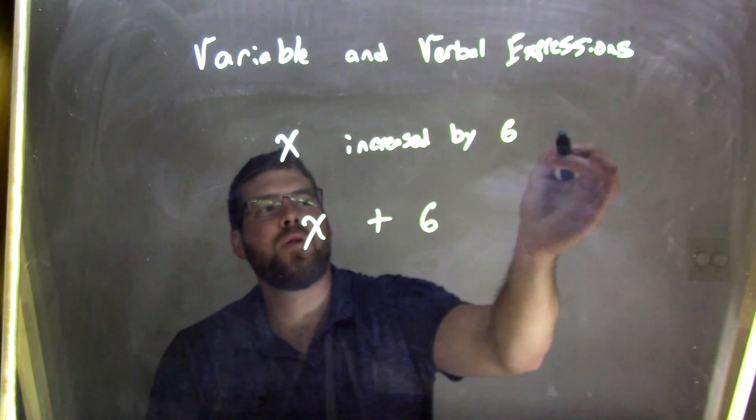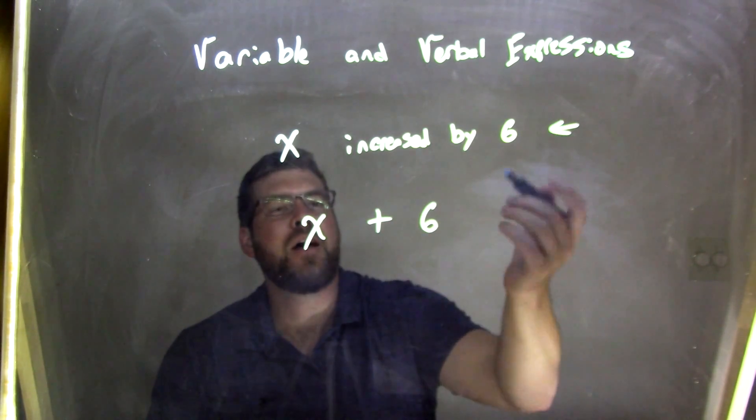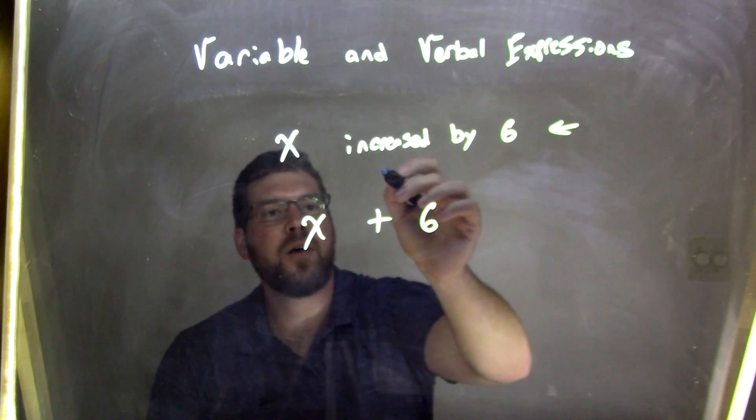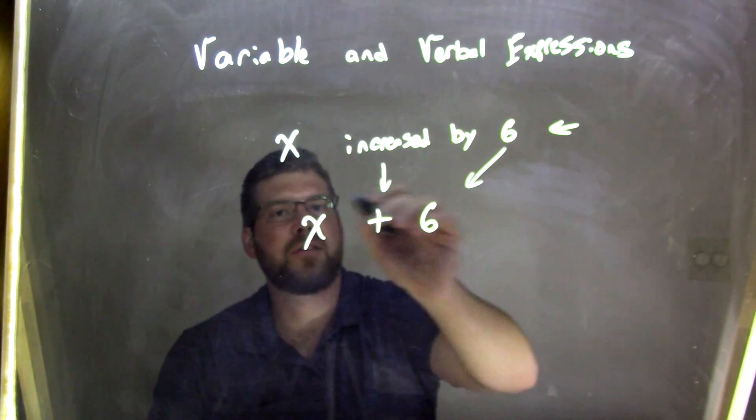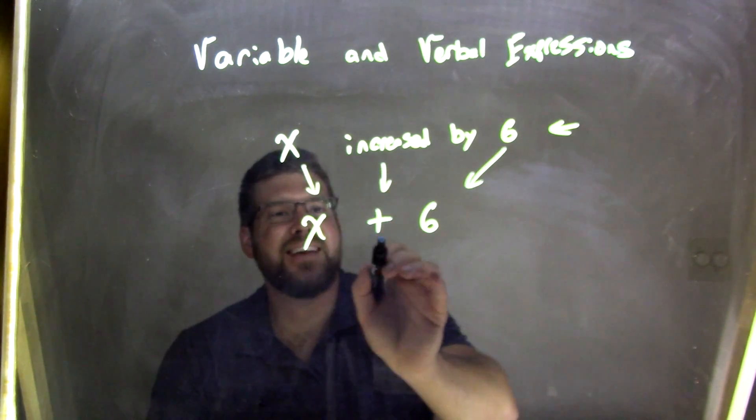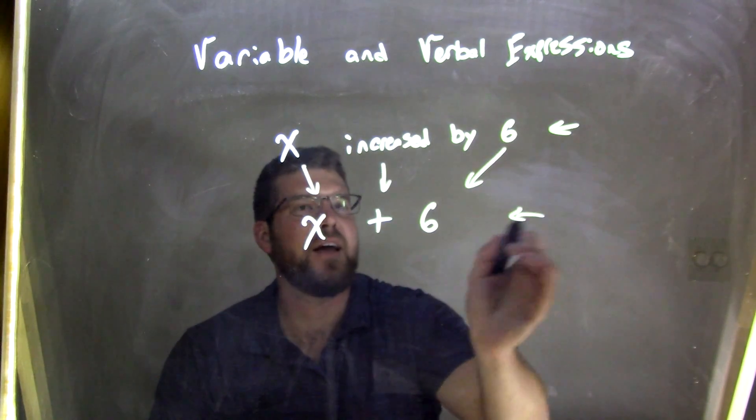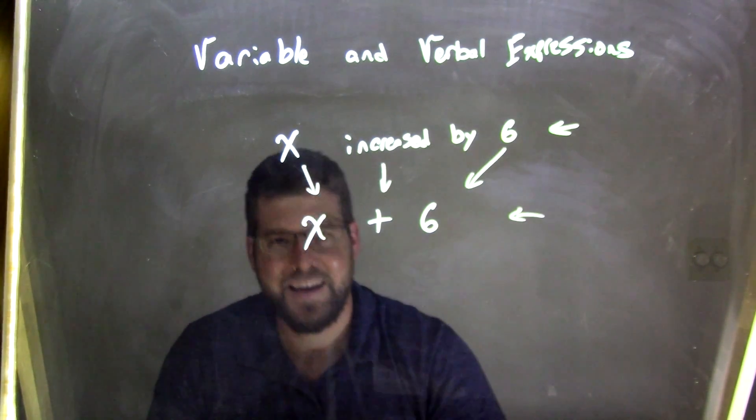Here's our verbal expression right here, and we'll convert that increased right there. 6 comes down, x is here, so x is increased by 6. This is our variable expression.